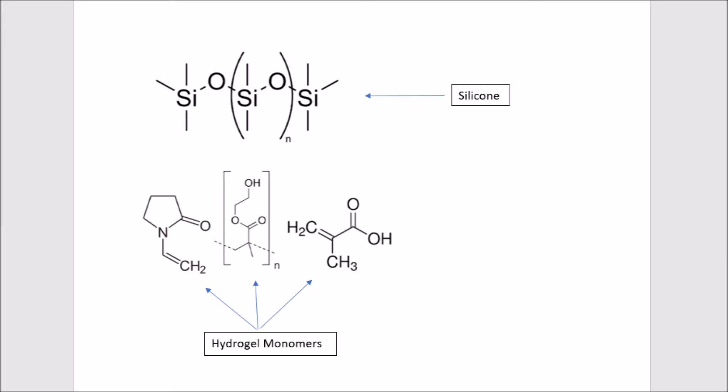Silicone hydrogel lenses are manufactured by combining silicone rubber with hydrogel monomers, such as N-Vinyl pyrrolidine, methacrylic acid, and Poly-2-Hydroxyethylmethacrylate.